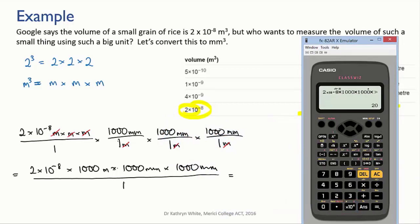And we find that the volume of a small grain of rice is about 20 cubic millimeters.